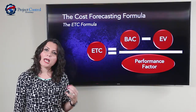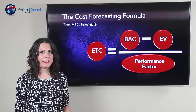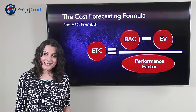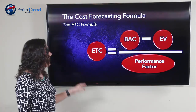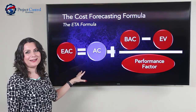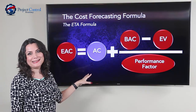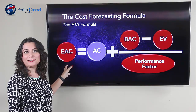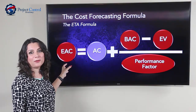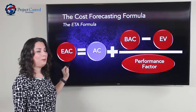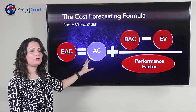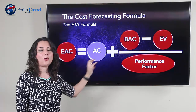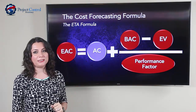So how do we calculate EAC or Estimate at Completion? It's just a matter of adding Actual Cost to the ETC formula. The universal formula becomes: Estimate at Completion equals Actual Cost plus (Budget at Completion minus Earned Value) divided by the Performance Factor.